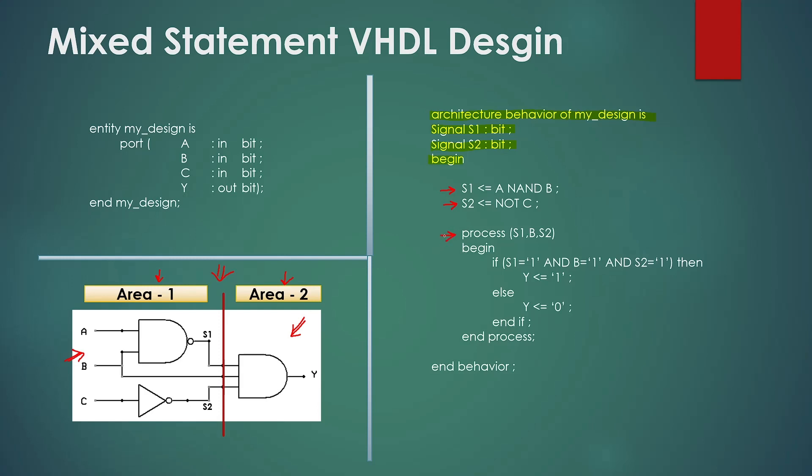Anything we write inside the process will execute sequentially, but process itself is a concurrent statement. And it will execute at the same time when two other concurrent statements are executing. So we have total three concurrent statements in this architecture. Also note that the whole process body starting from process to the end process will be considered as one single concurrent statement.